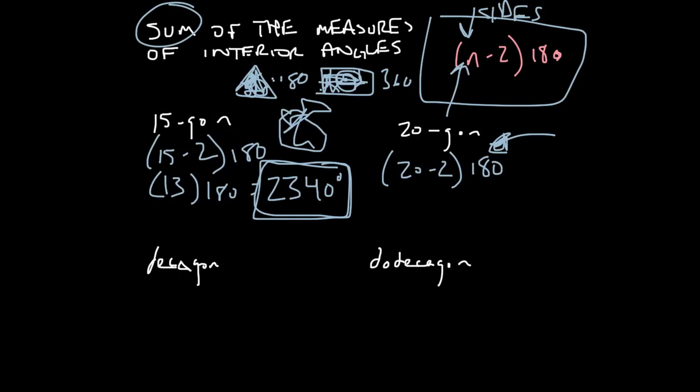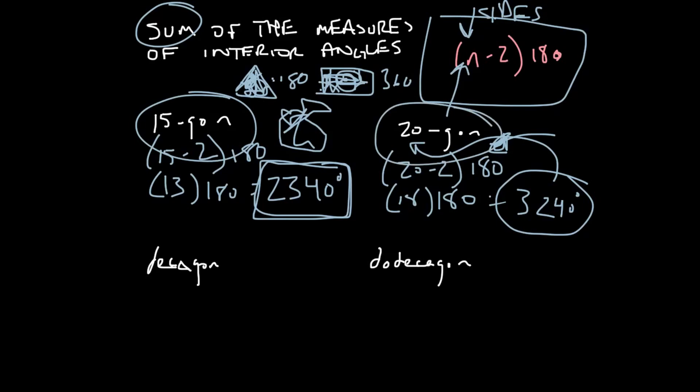So let's do 20 minus 2. We get 18. And then 18 times 180 is 3,240 degrees. That's how many degrees the 20-agon adds up to. Now, if you're doing a bunch of these at once, usually you can look at it. But, you know, if it's 15-agon, it's going to have less than the 20-agon. So you can kind of compare and contrast.